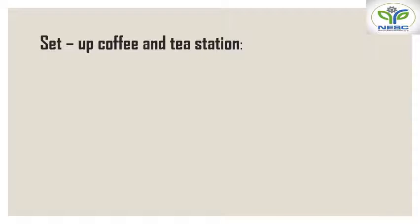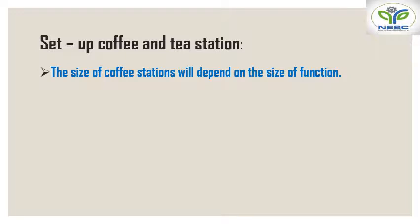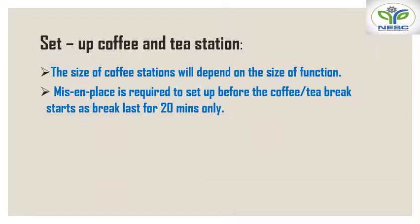When setting up a coffee and tea station, the banquet team must follow some guidelines. First, the size of the coffee station depends on the size of the function. The banquet team is responsible for knowing what type of function is taking place — whether it is a meeting, conference, or convention — and they should also know the number of guests, then arrange the coffee station accordingly.